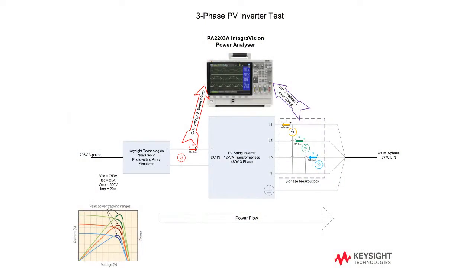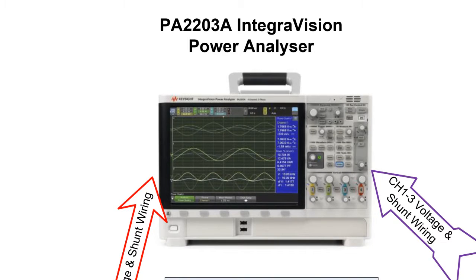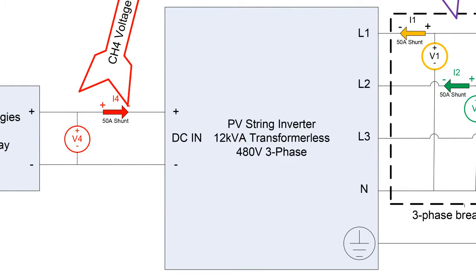We're using the PA2203 IntegraVision Power Analyzer. The device under test that we'll be talking about today is a 12kVA transformerless 480 volt three-phase inverter.